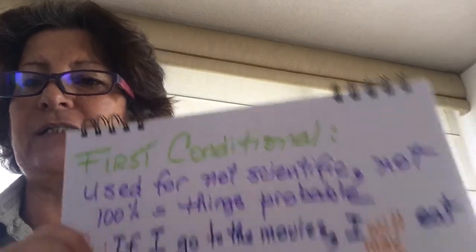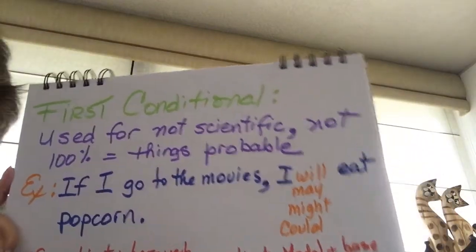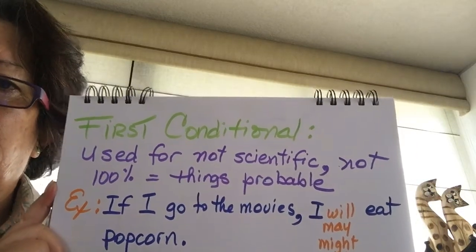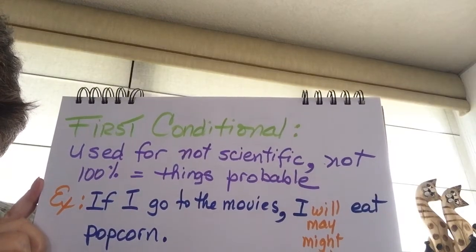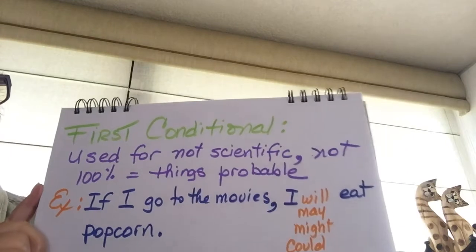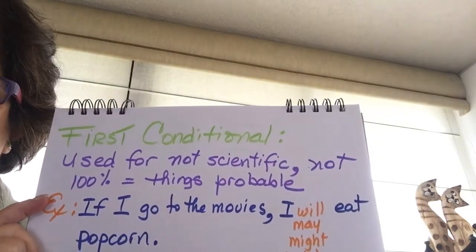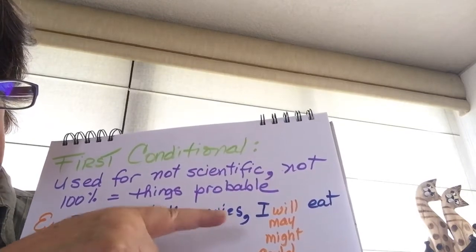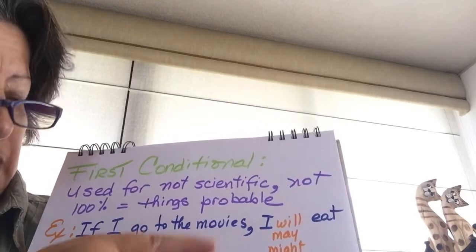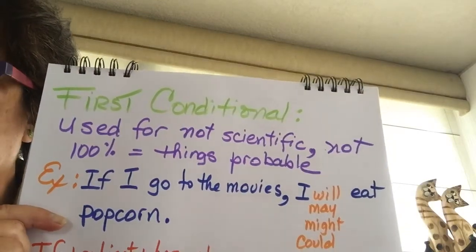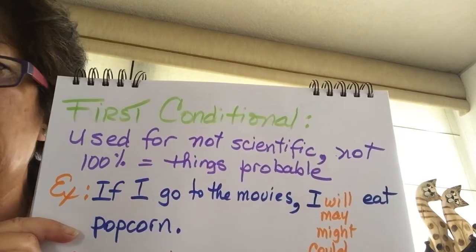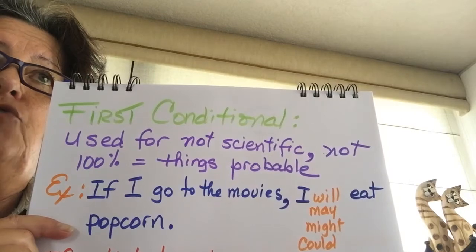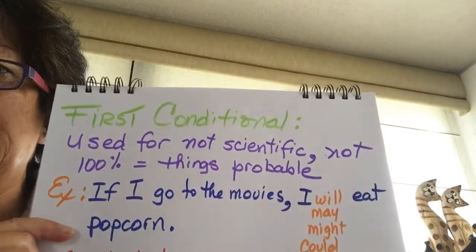Let's continue now with the first conditional. This conditional is used for things that are not scientific — things that are not a hundred percent true or sure, things that are probable. If we are going to use things that are probable, we are going to use the modals that we already studied in our sentences. I have here an example: if I go to the movies, I will, or may, or might, or could eat popcorn. This means it's not certain that every time I go to the movies I will eat popcorn — sometimes I might eat candy or drink cola. So, as I said, things that are probable.